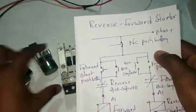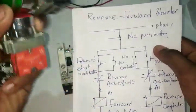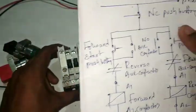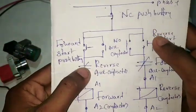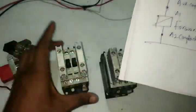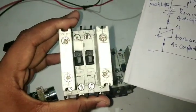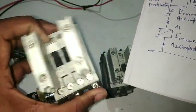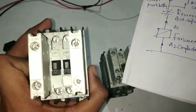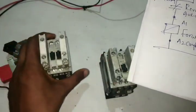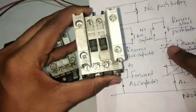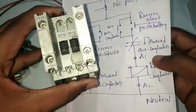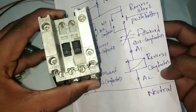So click on the reverse and go for the opposite. NC is auxiliary contactor, NO is auxiliary contactor. NO is 1 NC. This is forward and reverse. 1 forward is auxiliary contactor, 1 reverse is auxiliary contactor. So, forward contactor, 1 reverse contactor.